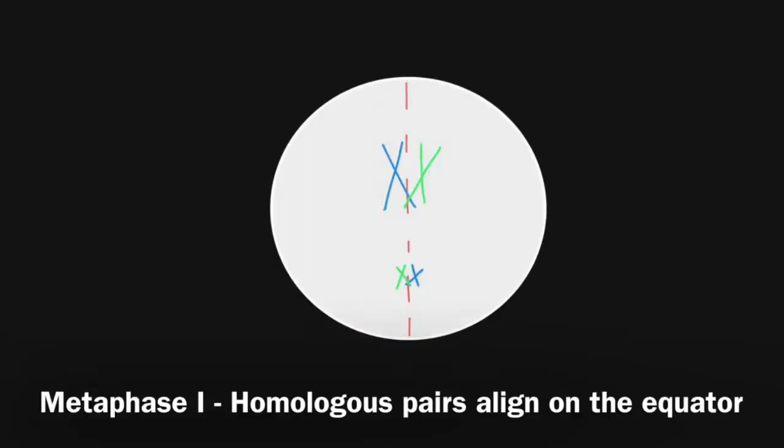During metaphase 1, the homologous pairs align along the equator, with each chromosome in the homologous pair existing with sister chromatids. Orientation of the maternal and paternal chromosomes in the homologous pair, represented here by blue and green, is random along the equator, and this contributes to genetic variation in the gametes.